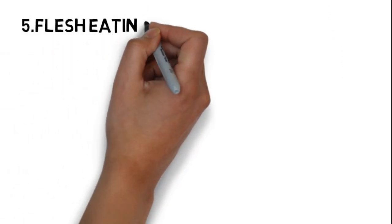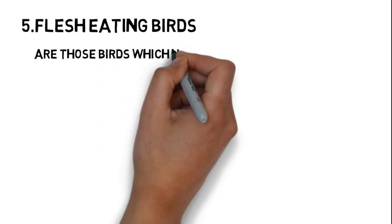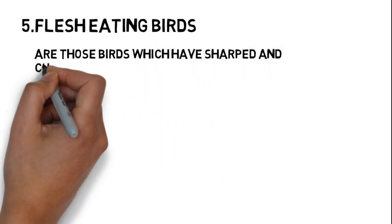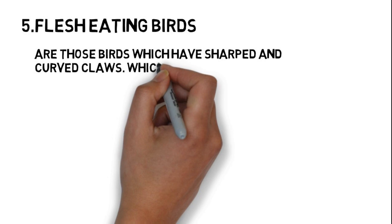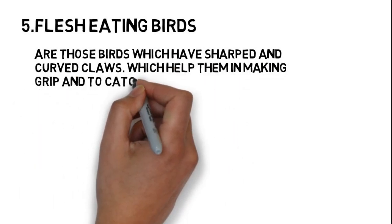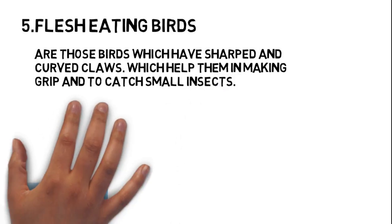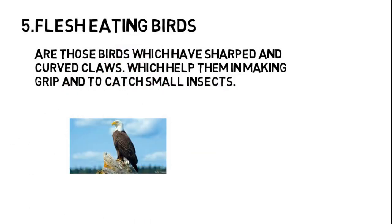Number five, flesh-eating birds. These birds have sharp and curved claws which help them make a grip and catch small insects. For example, eagle and owl.